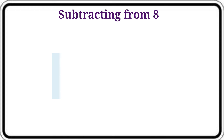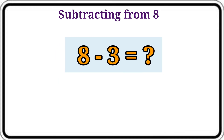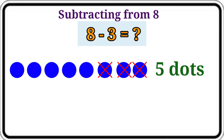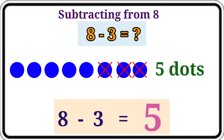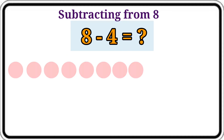Then to find the answer: 8 minus 3. Let's count the dots that are not crossed. Here 5 dots are not crossed. So the answer is 5. Let's write them. 8 minus 3 is equal to 5.